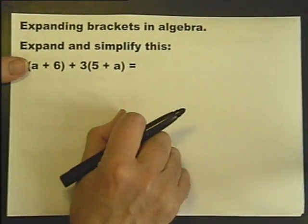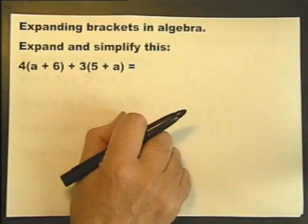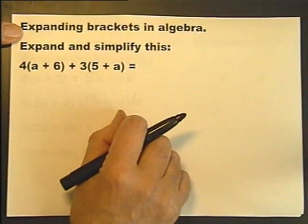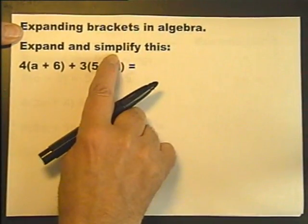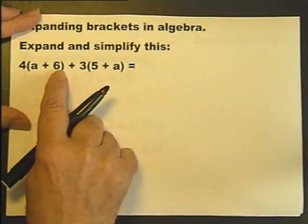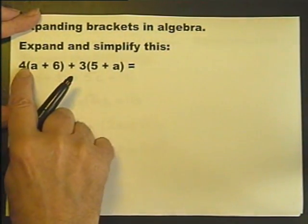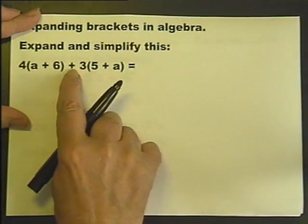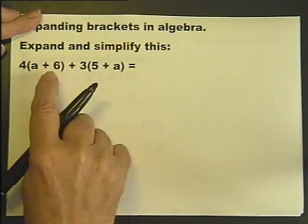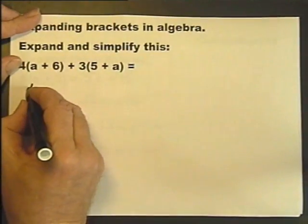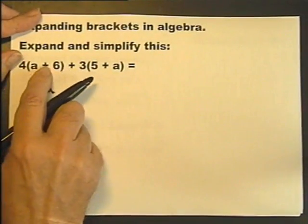So this is moving on because this is different to the last time we looked at it, just a little bit. Expand and simplify. So we multiply both of these terms by that 4, and both of these terms by that plus 3. So we've got 4 times A, 4 times plus 6, 24.